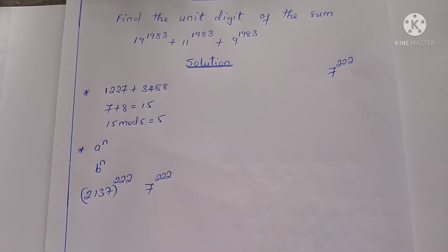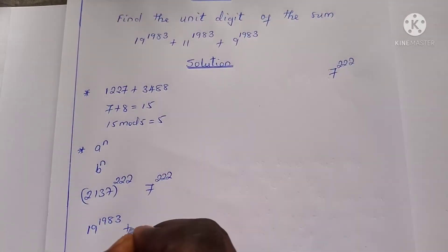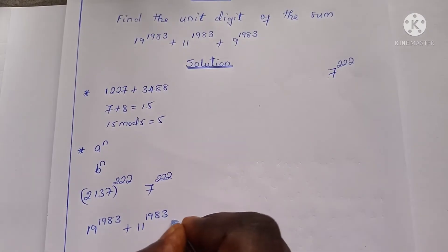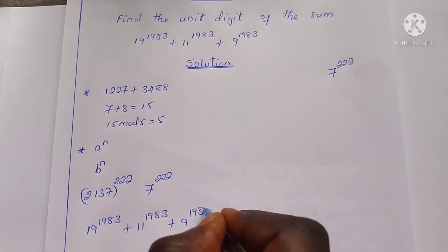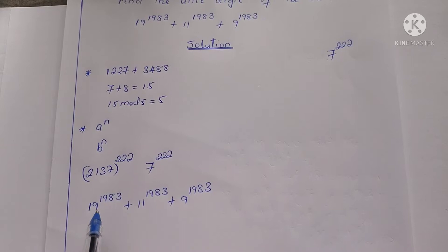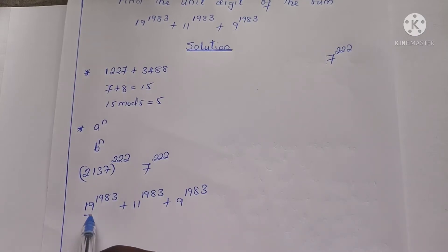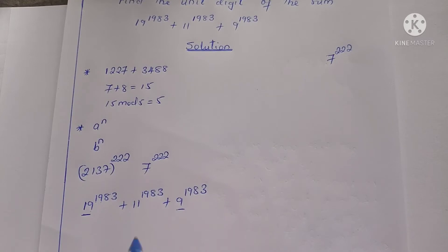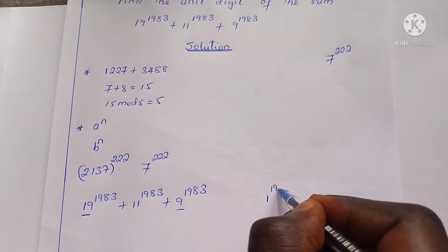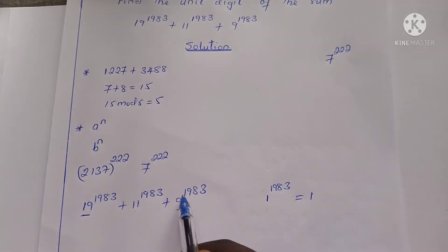In this question, we need to find the unit digit of 19^1,983 + 11^1,983 + 9^1,983. The unit digit of 19^1,983 is simply the unit digit of 9^1,983. The unit digit of 11^1,983 is the same as the unit digit of 1^1,983, which is just 1. So what we actually need to find is the unit digit of 9 raised to the power 1,983.